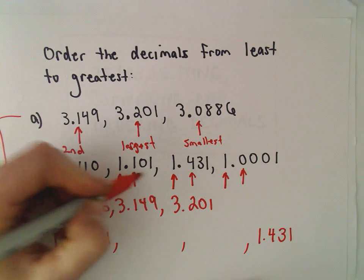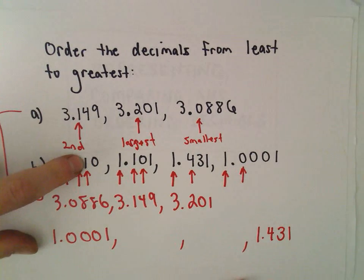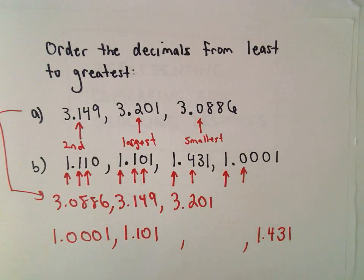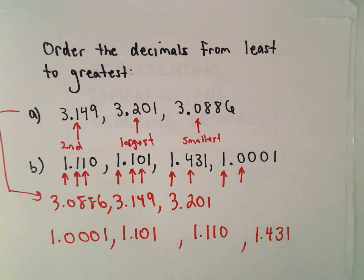So now if we move over one more digit to kind of break the stalemate here, again, we've got a 1, this one is a 0. Well, 0 is smaller. And now we've got everything listed from smallest to greatest.